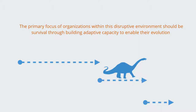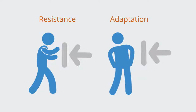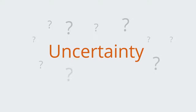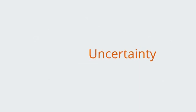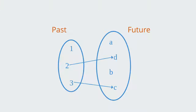The primary focus of organizations within this disruptive environment should be survival through building adaptive capacity to enable their evolution. This VUCA world requires a fundamental shift from resisting change to adapting to it, requiring a new set of capabilities surrounding adaptive capacity — the capacity for the organization to evolve new solutions in response to their changing environment. Adaptation involves a recognition of uncertainty: that we cannot fully know future outcomes. Most of our business and financial analysis is dependent upon ergodicity — the idea that the future is knowable as a linear transformation of the past.